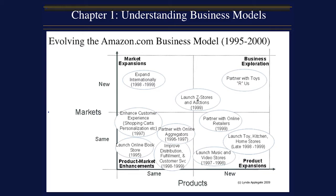Businesses can market existing products or new products, targeting existing markets or new markets. There are four approaches to evolve a business model. First, enhance: incremental improvement of an existing strategy or capability. Second, expand: launch new product categories, enter new markets, or expand capabilities. Third, explore: launch new businesses and build new capabilities. Fourth, exit: exit a product or market, or outsource a capability.